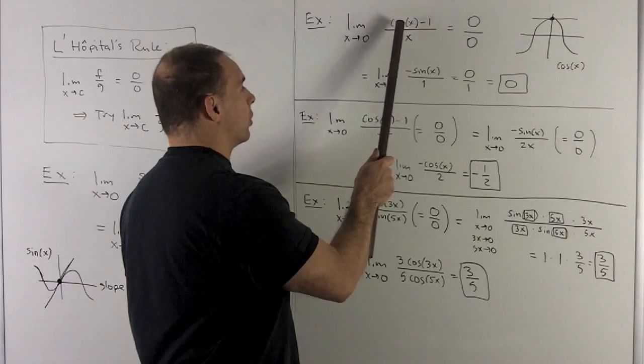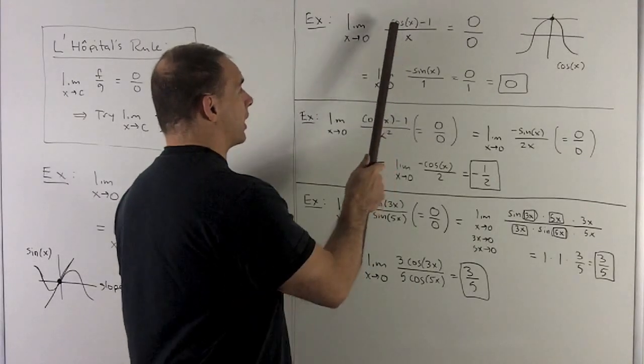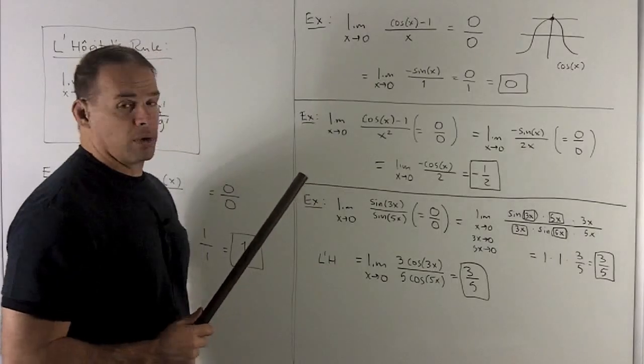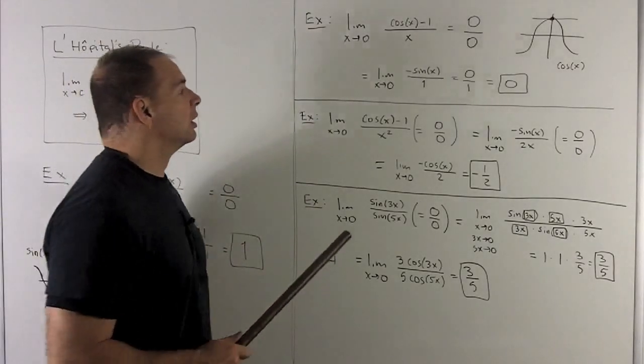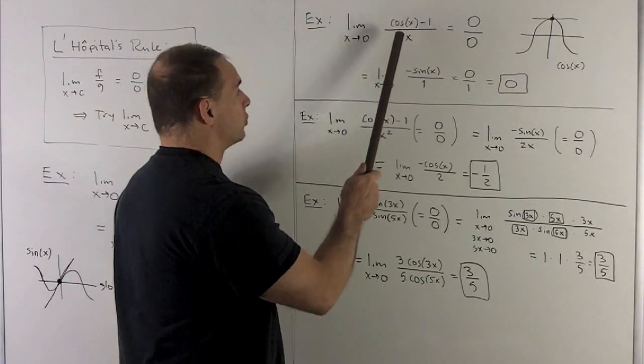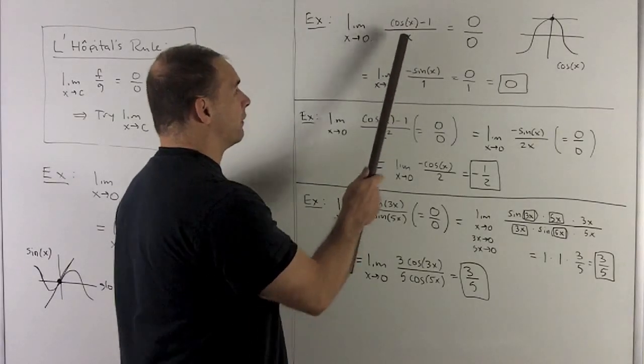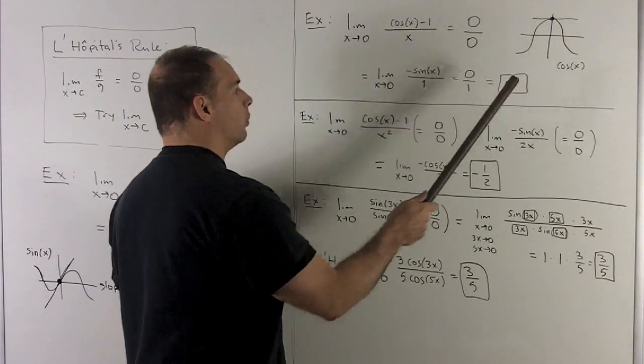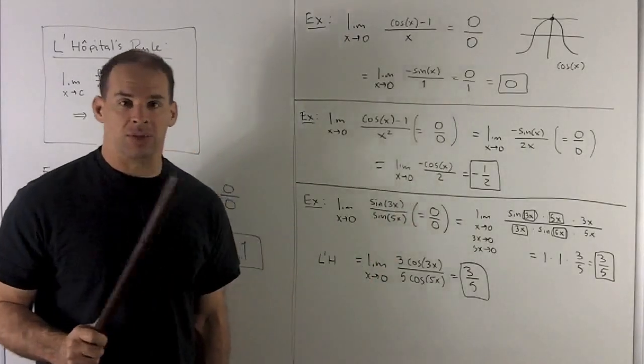So let's take a look. I put 0 in here. Cosine of 0 is 1. So I get 1 minus 1 over 0. So we're looking at a 0 over 0, and L'Hopital's rule applies. I take the derivative. Derivative of cosine is minus sine. Derivative of x is 1. So I wind up getting 0 over 1, which is equal to 0. And that's what we were expecting.